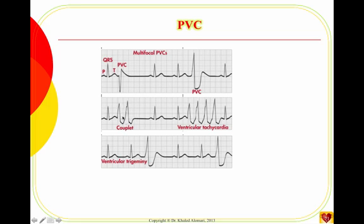Two consecutive PVCs are called a couplet. Three or more PVCs in a row constitute VTAC. Patterns also matter: if every third beat is a PVC — one normal, two normal, then a PVC — that's called trigeminy. If every other beat is a PVC — one normal, then a PVC, then normal, then PVC — that's called bigeminy. These patterns will be covered in more detail in critical care.